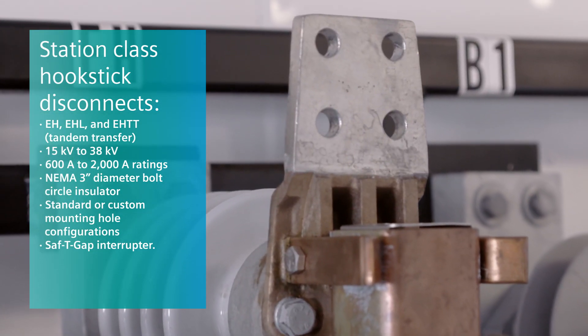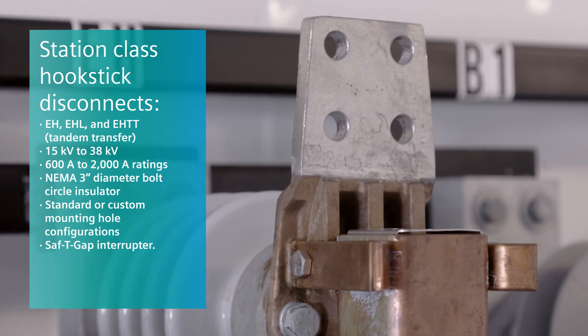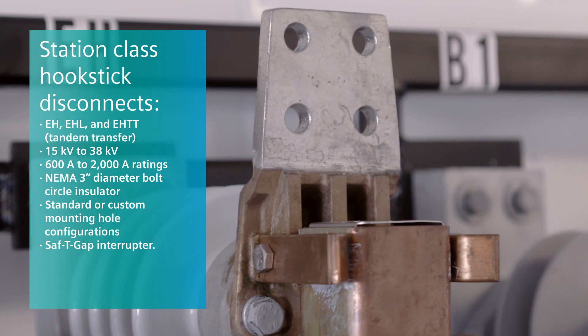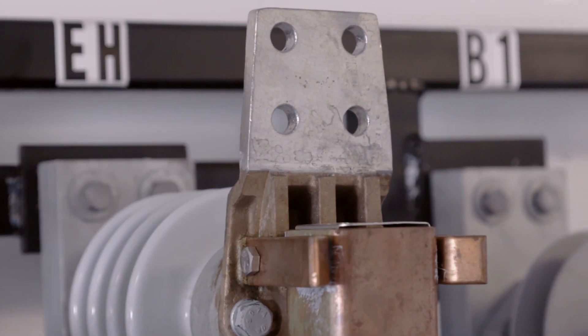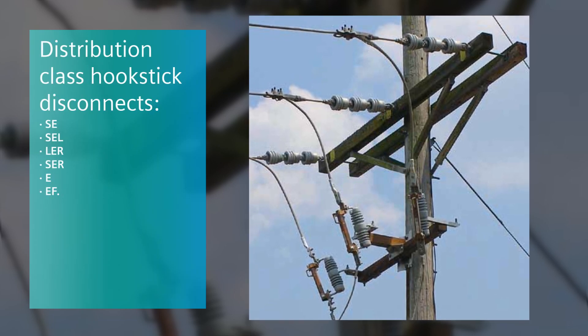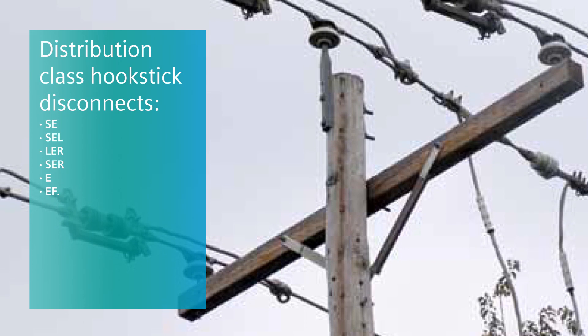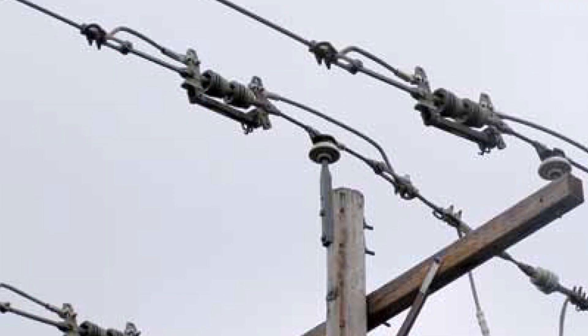The mounting hole can be a standard configuration or customized to fit existing substations. Siemens can incorporate a safety gap interrupter for load breaking capabilities. Siemens distribution class hook stick disconnects are available in a number of different types. Options available include load break hooks and a quick break mechanism for most designs.